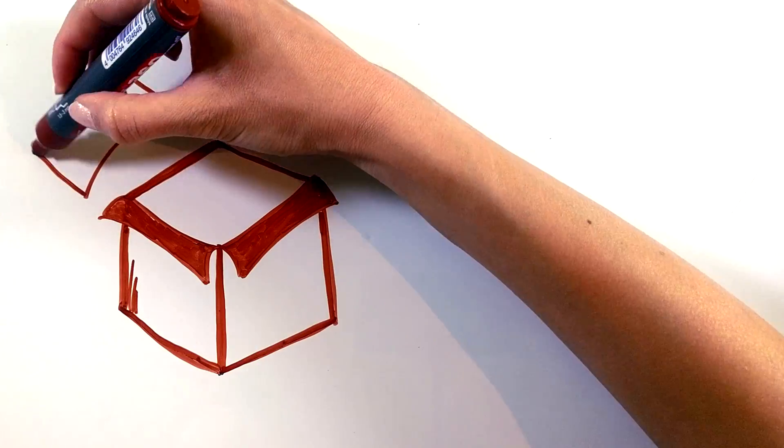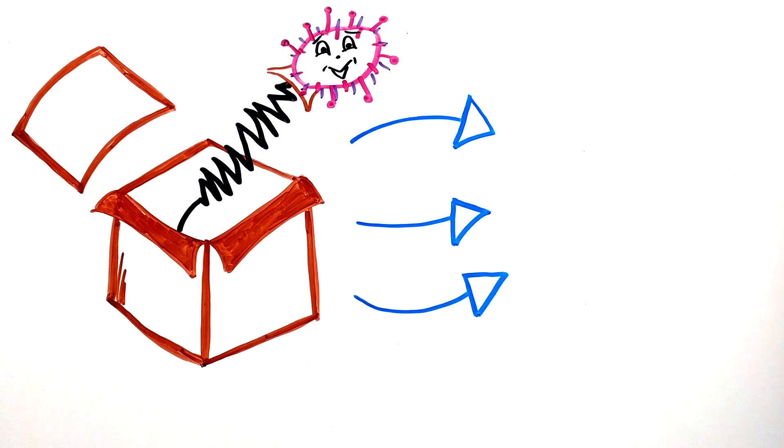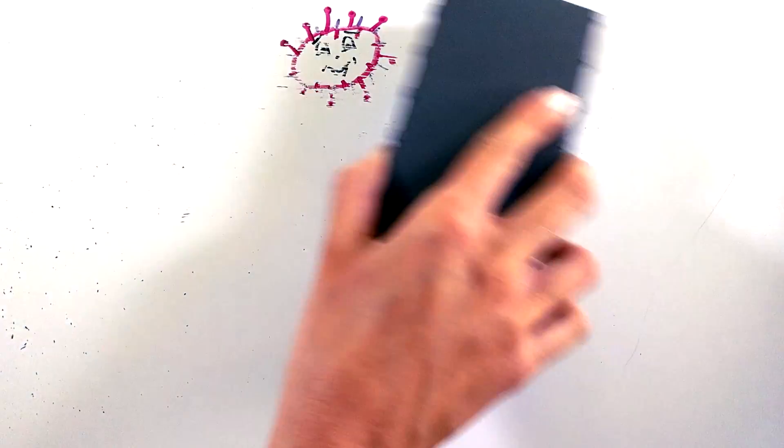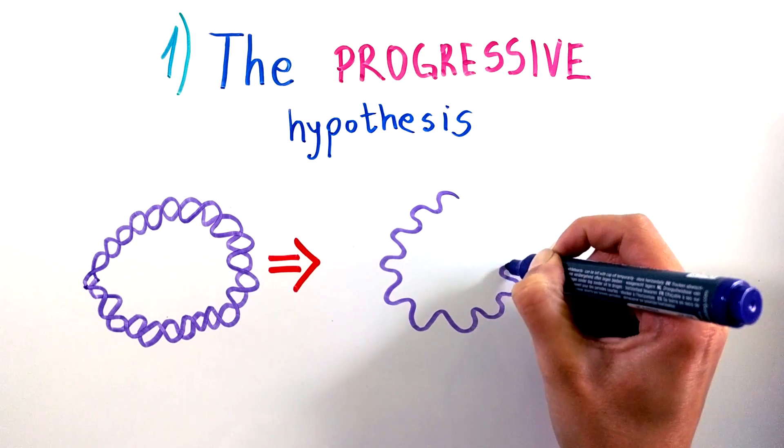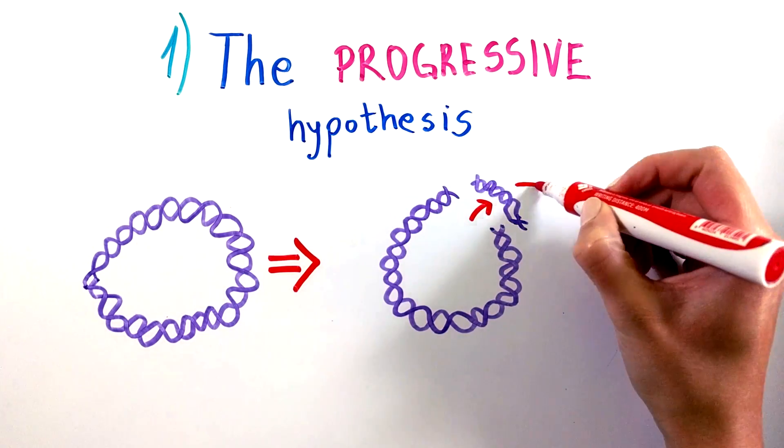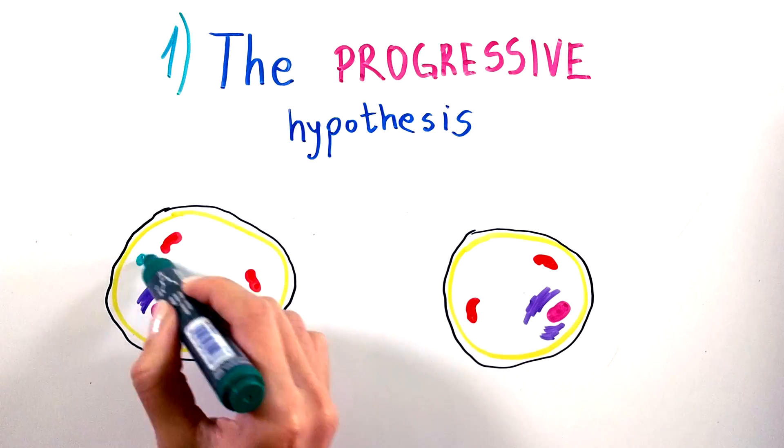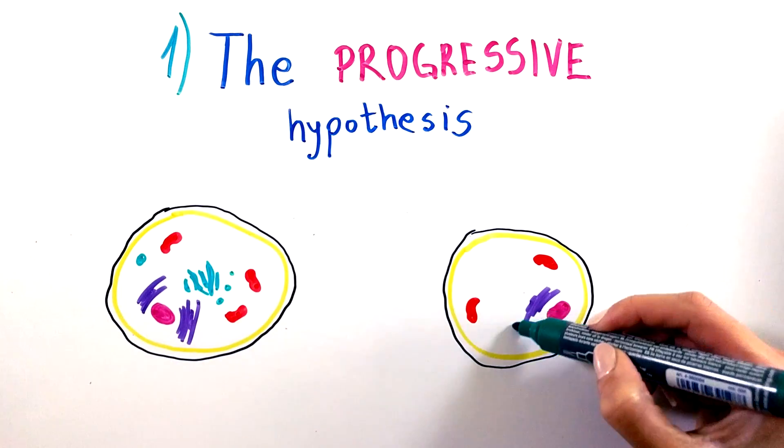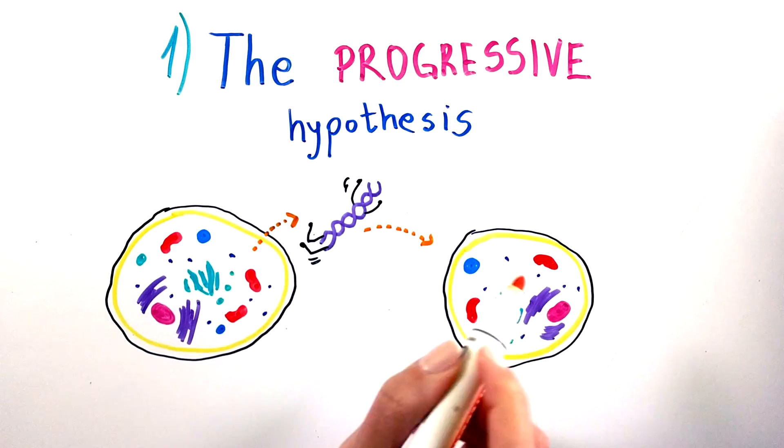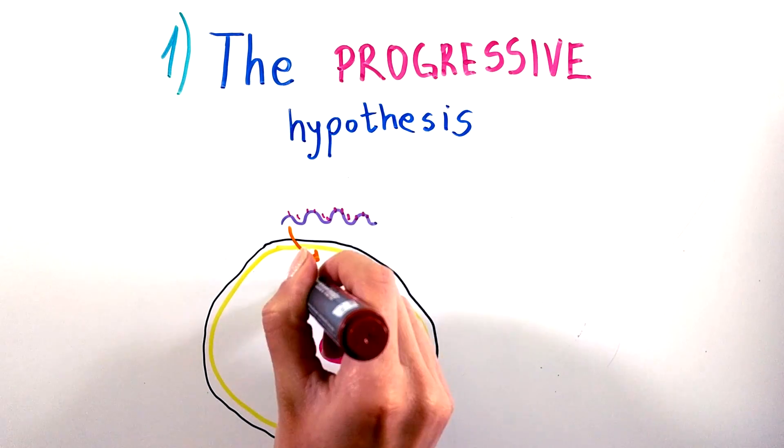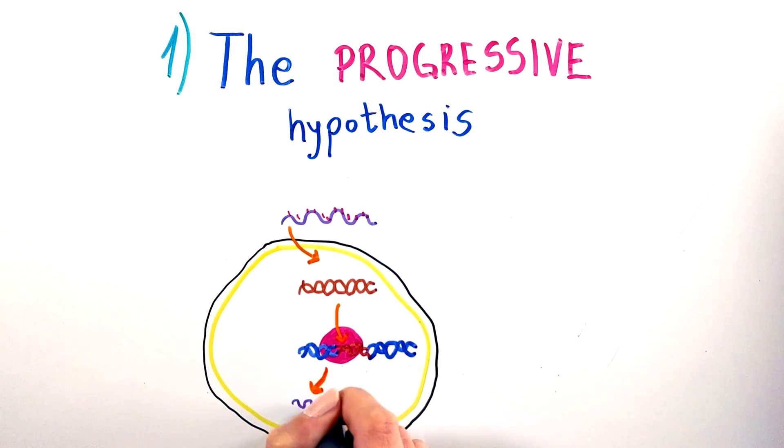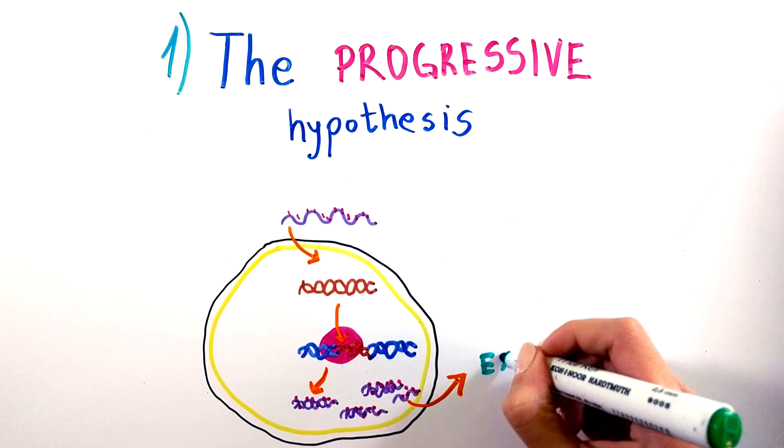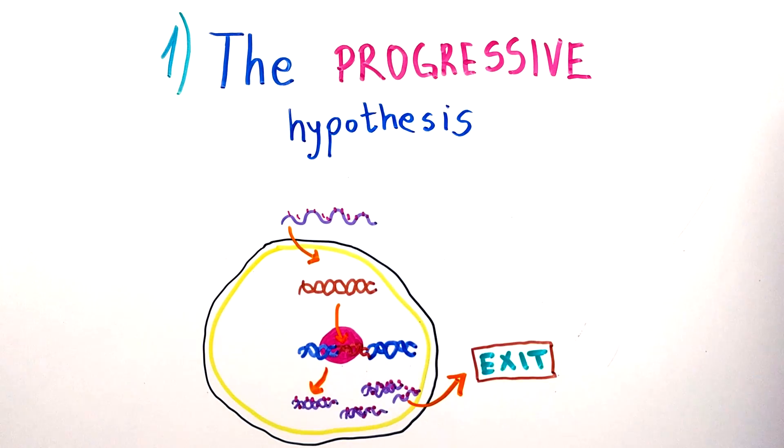It is still unclear why and how viruses actually emerged, but there are three main hypotheses. First, the progressive or escape hypothesis. It states that viruses arose from genetic elements that escaped from the genes of larger organisms. These jumping genes gained the ability to independently move between cells, transferring genetic information from one organism to another. When the pieces of genetic material enter a host cell, they can be transcribed and translated. As a result, copies of the viral genes are produced, and now they can exit the cell and begin the process again.